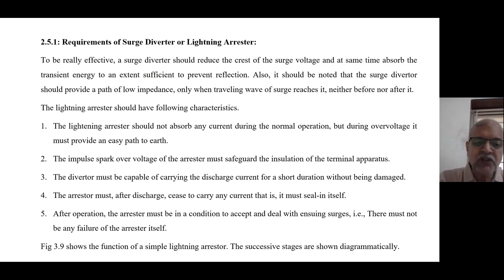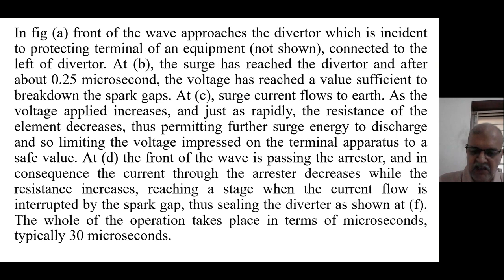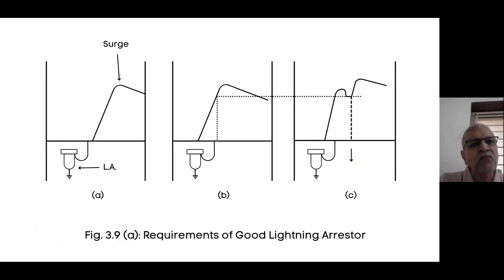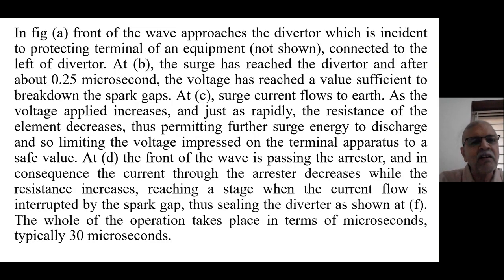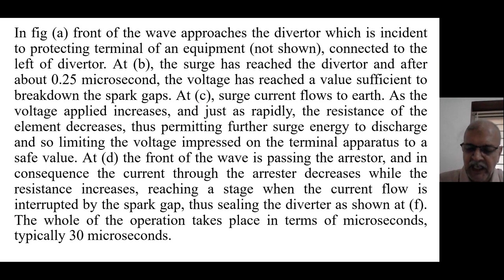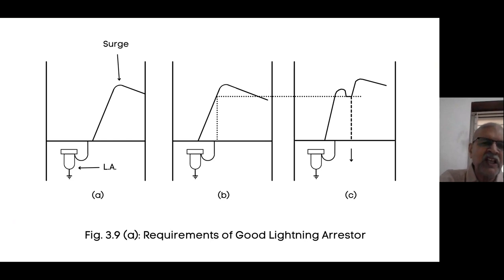Figure 3.9 shows the function of a simple type of lightning arrester. The surge is incoming to the lightning arrester. At that time the lightning arrester is not operating, not passing any current, not working. Then the surge goes ahead.